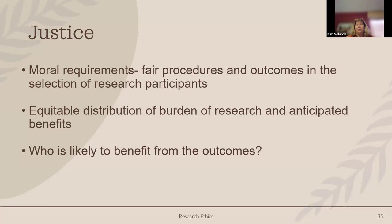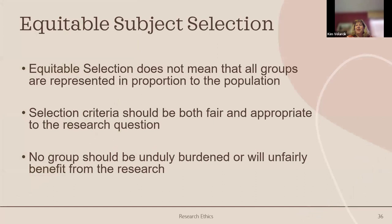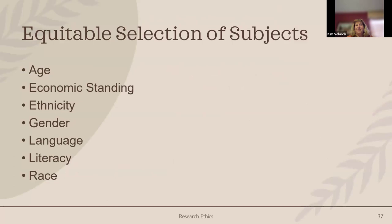Equitable selection doesn't mean all groups are represented in exact proportion to the population, but we ensure no group is unduly burdened or unfairly benefits from the research. Equitable selection also encompasses age, economic standing, gender, language, and literacy. If a person with lower literacy could potentially benefit from the research, extra steps should be built into the study so that these individuals can be enrolled if they wish.